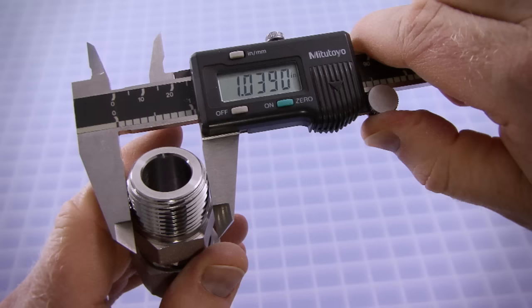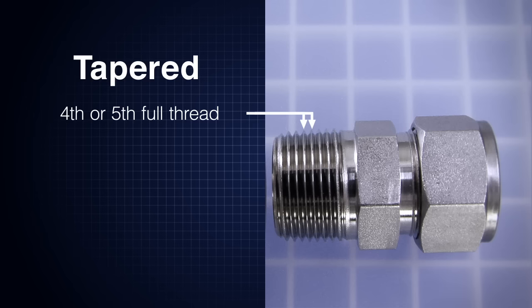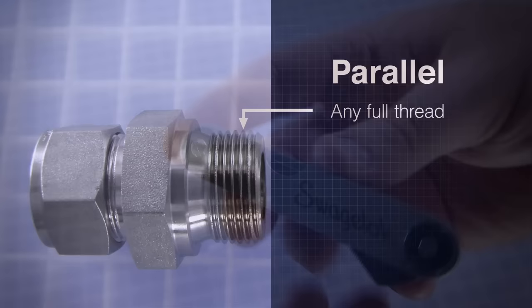Now use the caliper to measure the nominal male or female thread diameter from crest-to-crest. For a tapered thread, measure the fourth or fifth full thread. For a parallel thread, measure any full thread.